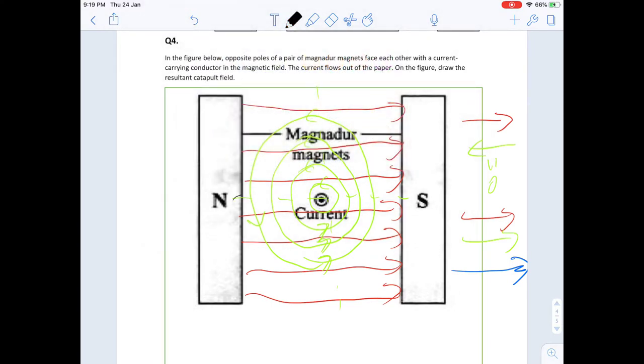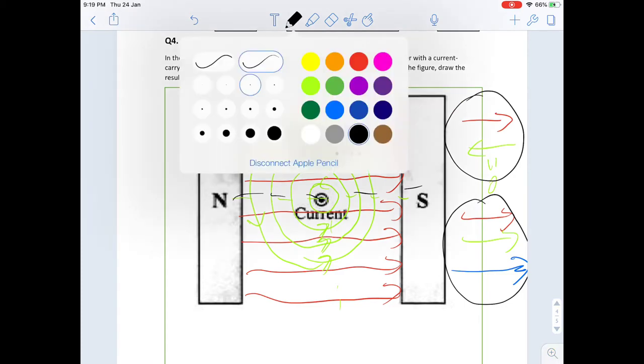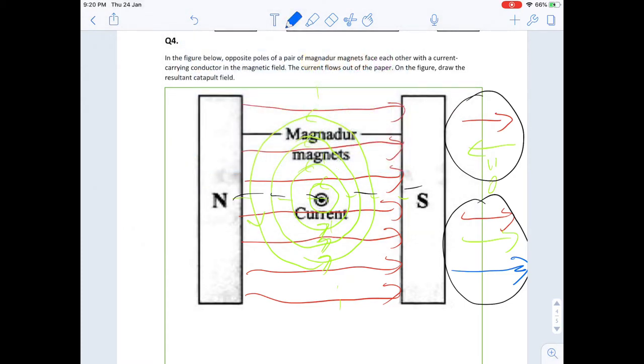Now I'm going to draw the combined magnetic field pattern like this. This shows the combined effect of the magnetic field pattern.